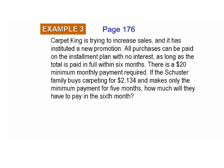Here's Example 3, which is on page 176. Carpet King is trying to increase sales and has instituted a new promotion. All purchases can be paid on the installment plan with no interest, as long as the total is paid in full within six months. There is a $20 minimum monthly payment required. If the Schuster family buys carpeting for $2,134 and makes only the minimum payment for the first five months, how much will they have to pay in the sixth month?